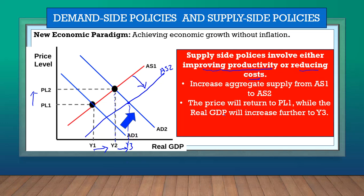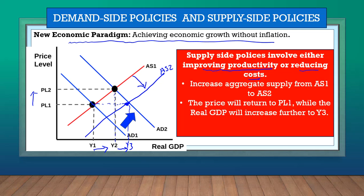So GDP increases further to Y3 when we apply the supply side policies — that's an even higher GDP, which is great. But look at what happens to the price: it returns back to PL1. By applying the supply side policies, we can get a higher GDP without inflation. That's the new economic paradigm — higher output with the price staying the same — achieved by combining demand side policies with supply side policies.